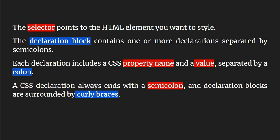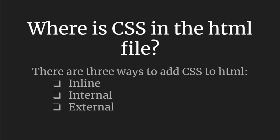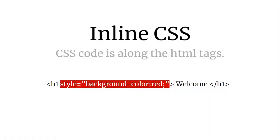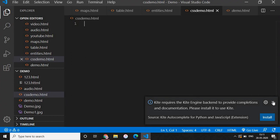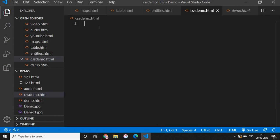There are three ways to add CSS to HTML5: inline, internal, and external. In inline CSS, the CSS code is along with the HTML tags — you can directly add the styling command inside the HTML element by adding style equals the property and value. Let's take an example and check the output.